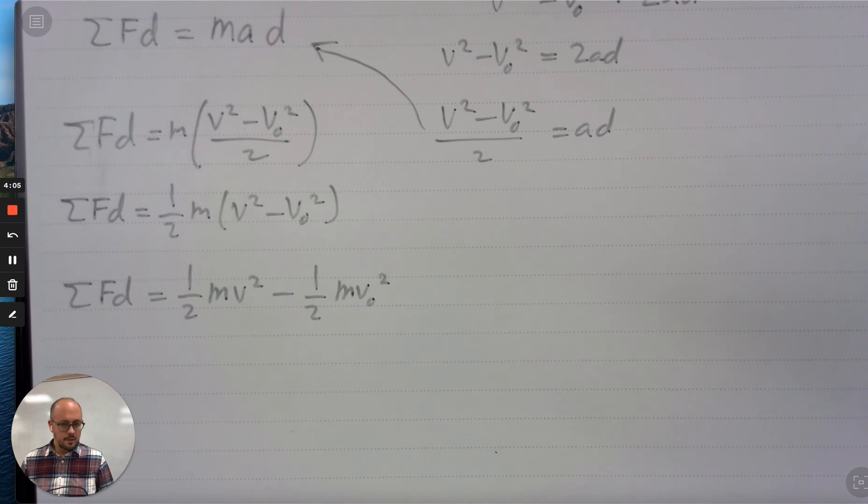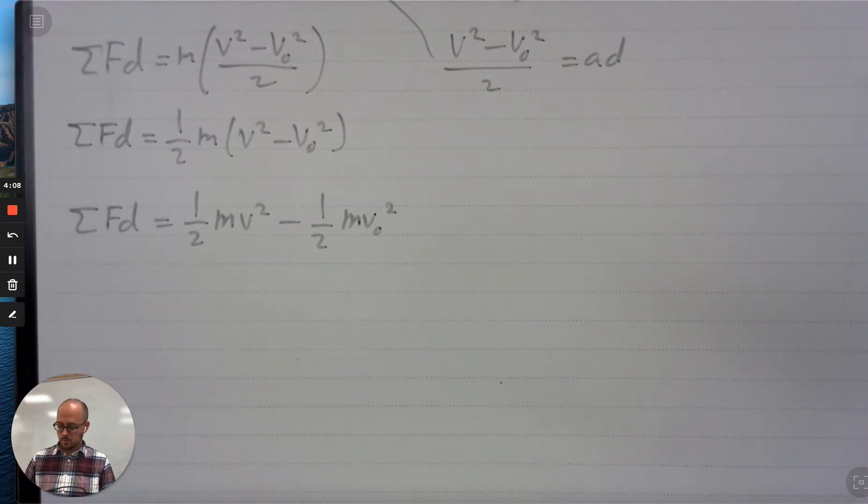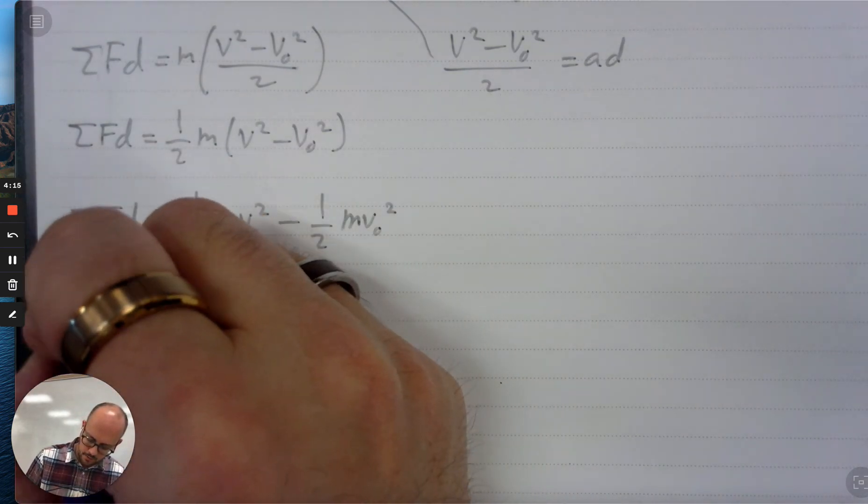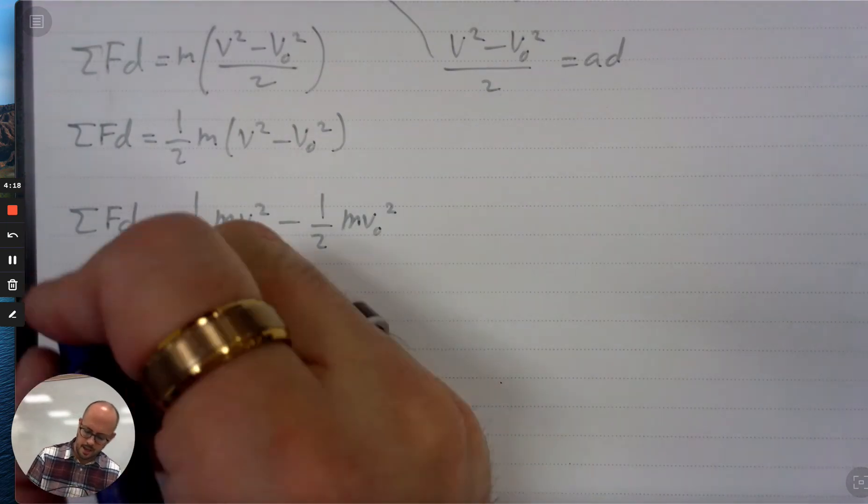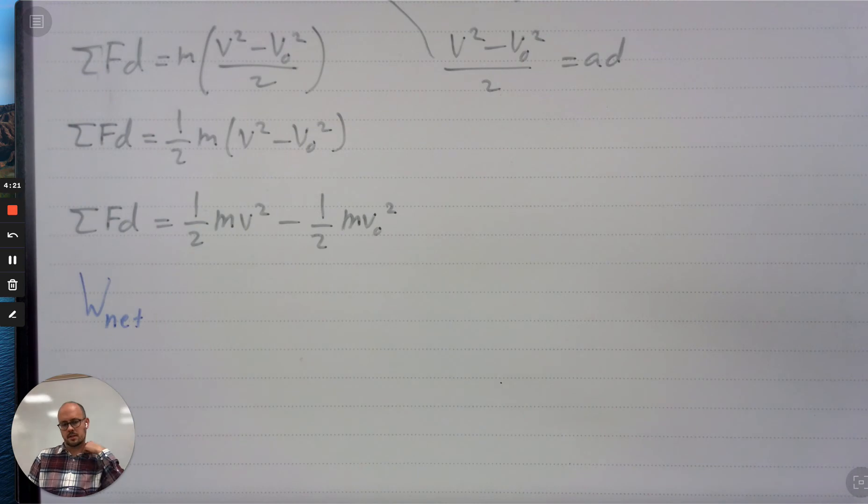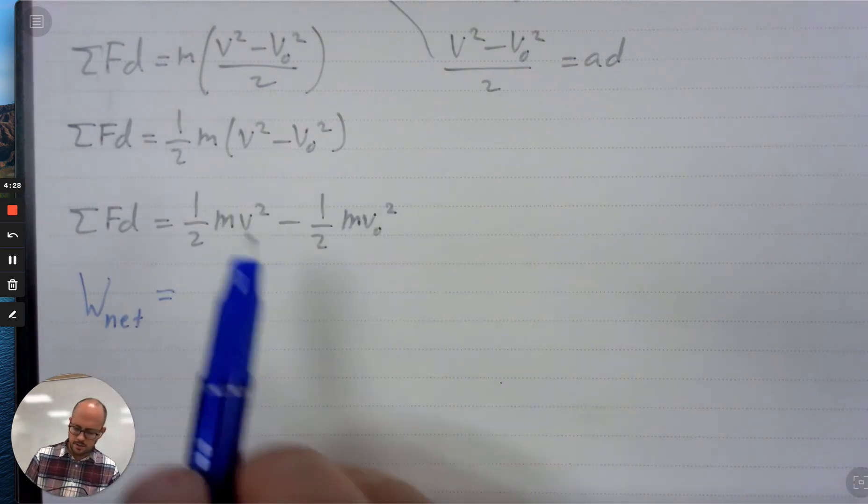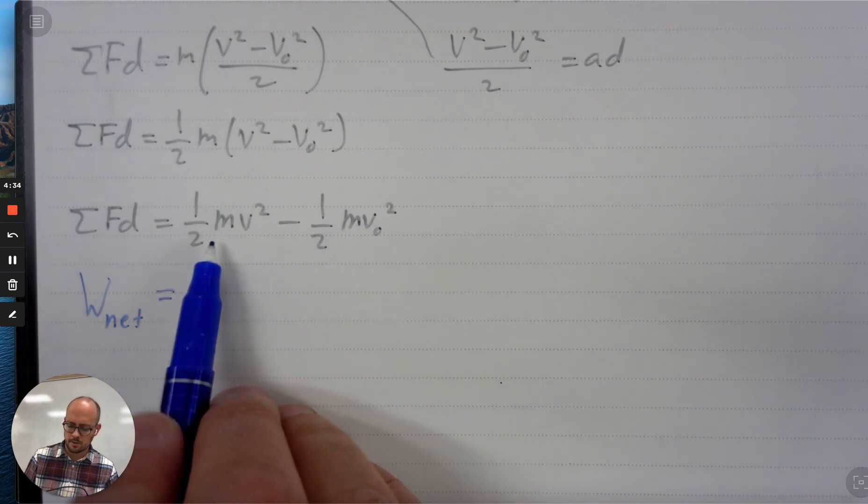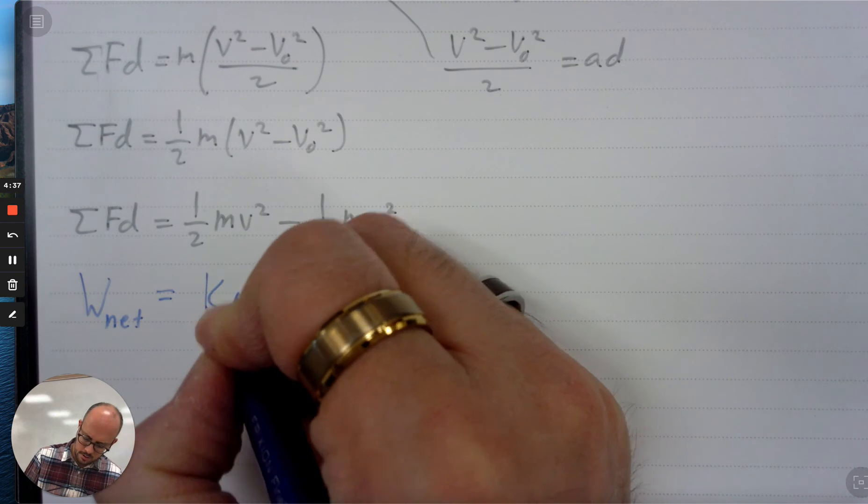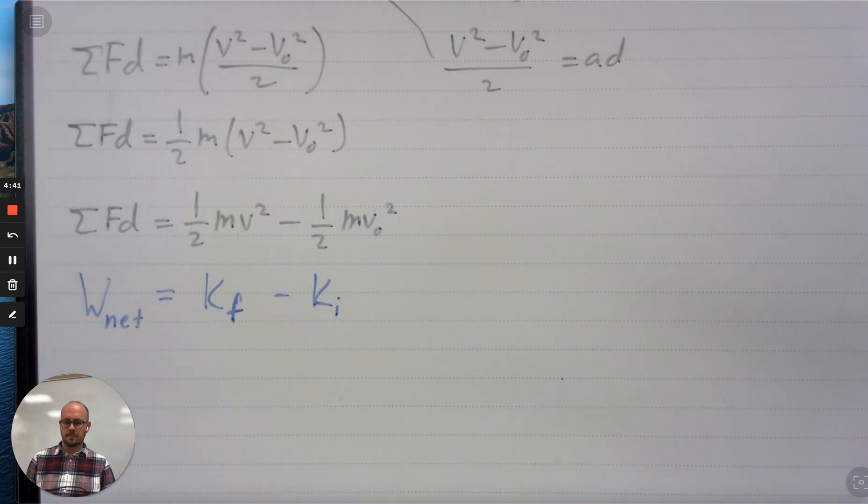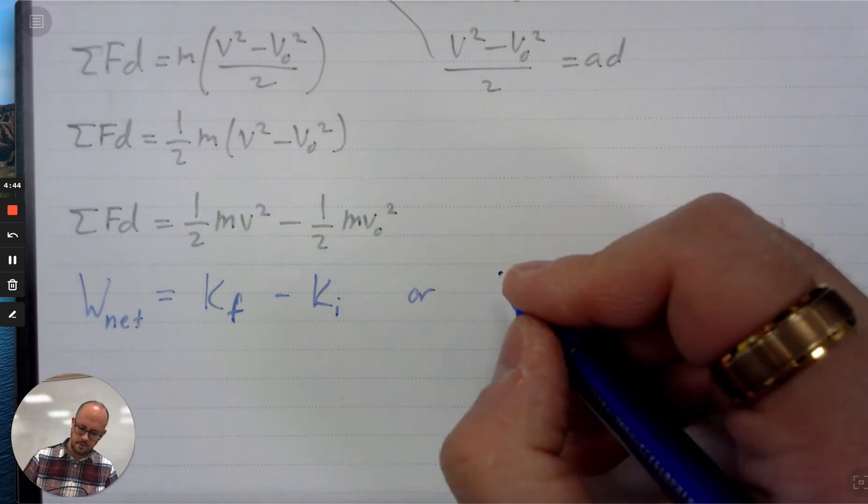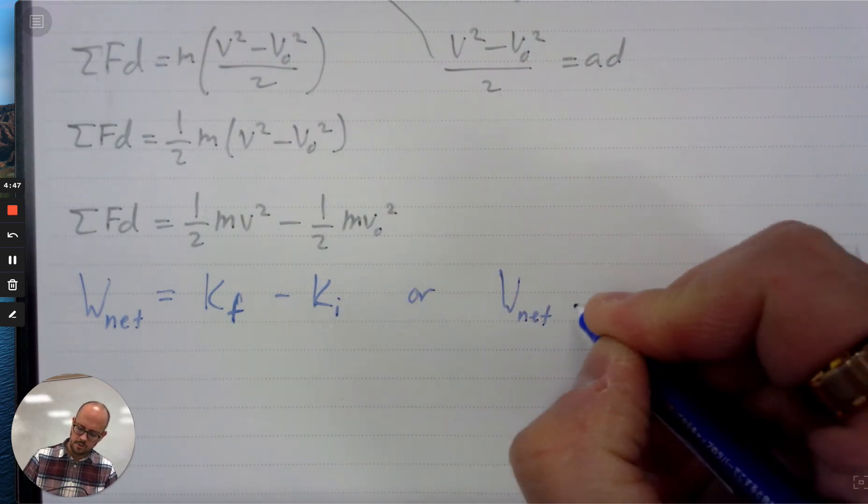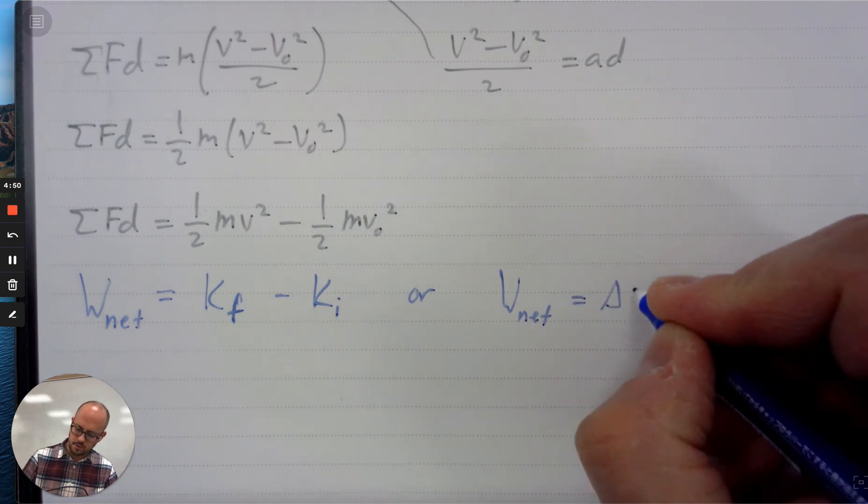And so this equation has some big significance to us because in very general terms, the work done by the net force would have the variable w. You can always add the subscript net to make it different from the just generic equation for work. And then as far as this is concerned, one half m v squared and one half m v naught squared, that would represent final kinetic energy minus initial kinetic energy. In other words, this work done by the net force is going to be equal to the change in kinetic energy.